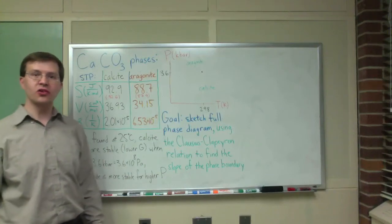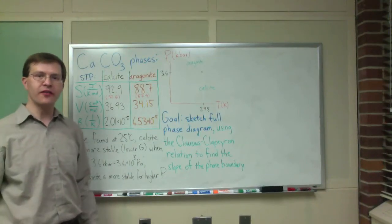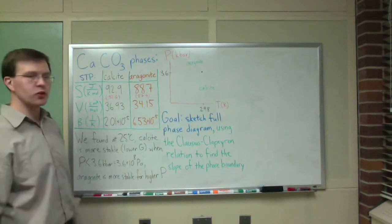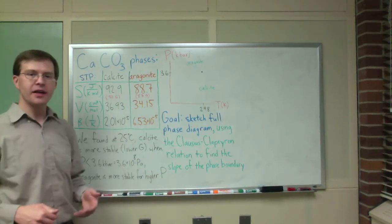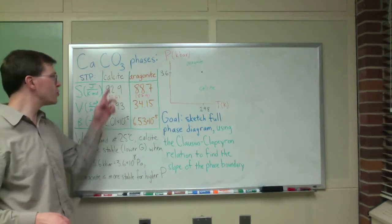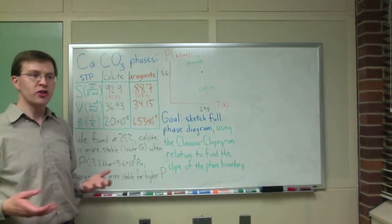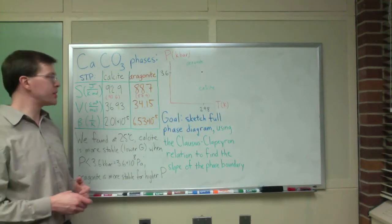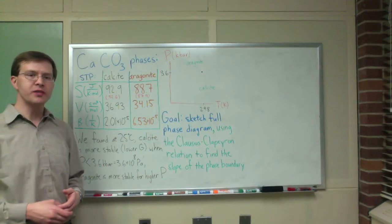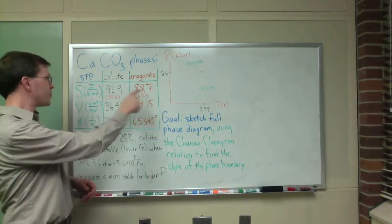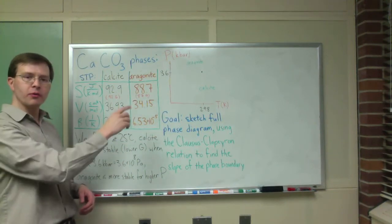In our thermal and statistical physics class, we've been studying phase transitions. In particular, we've been using calcium carbonate as a model system because it has two different crystal structures for the same material that have well-characterized properties. Here we have the entropy per mole and the volume per mole.